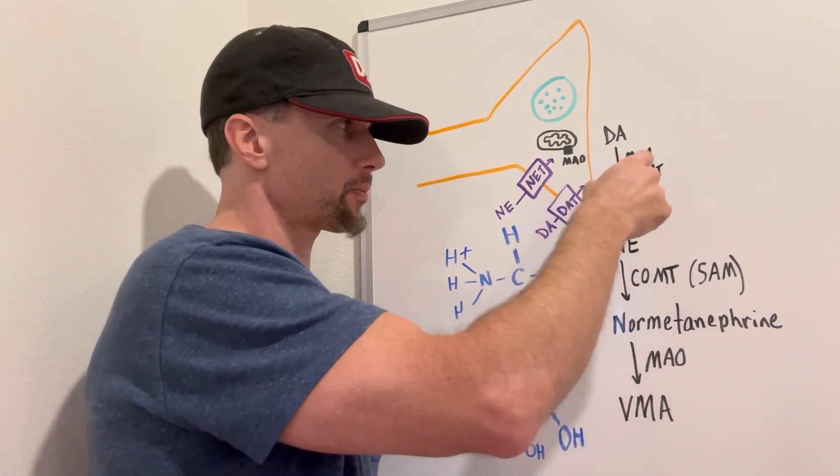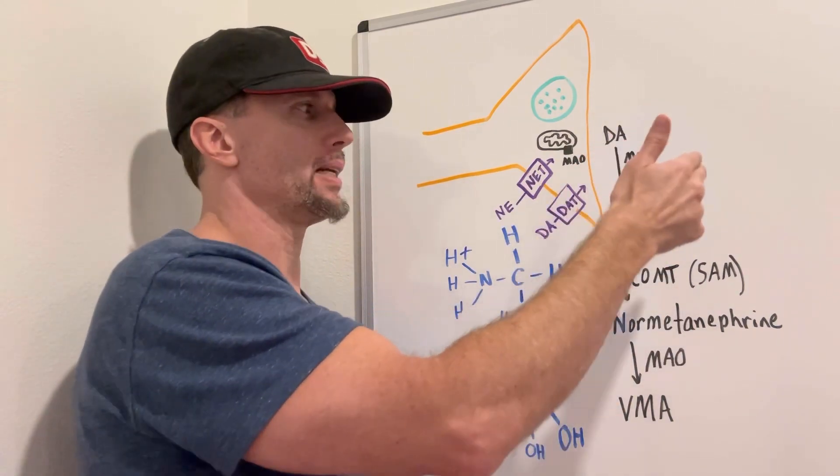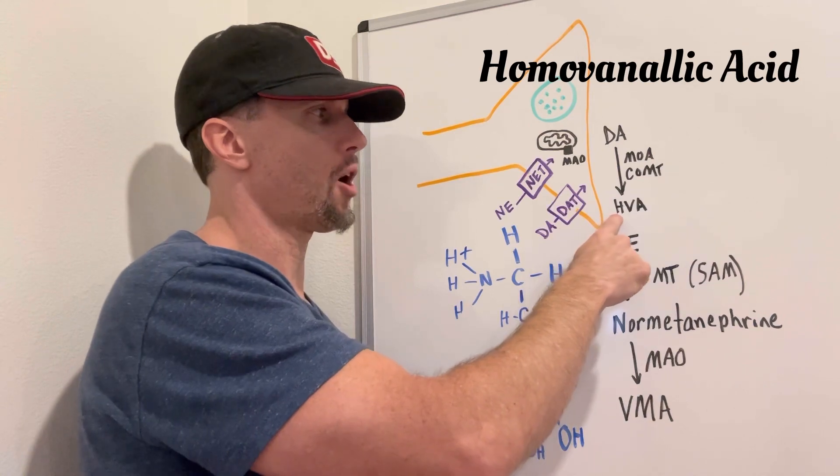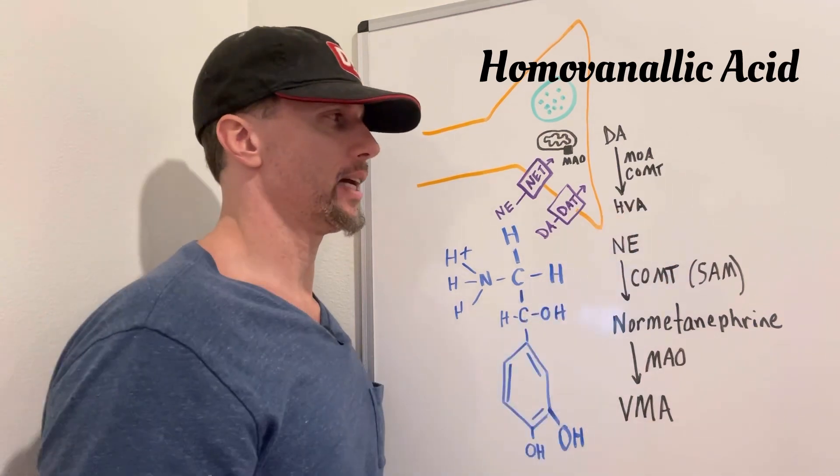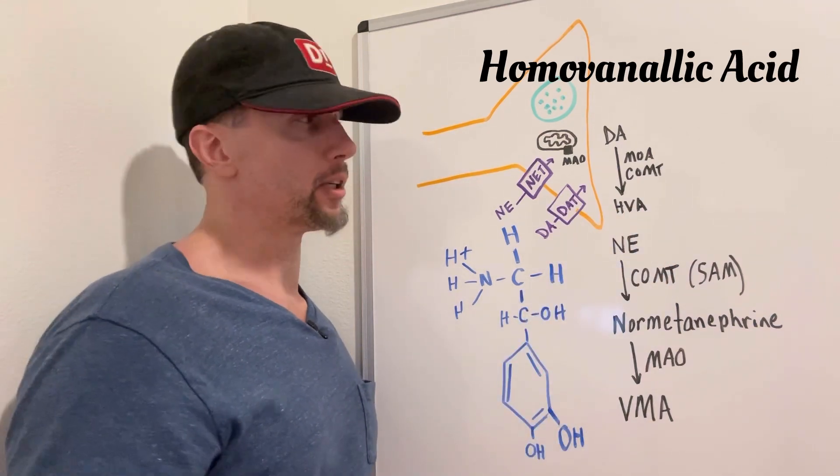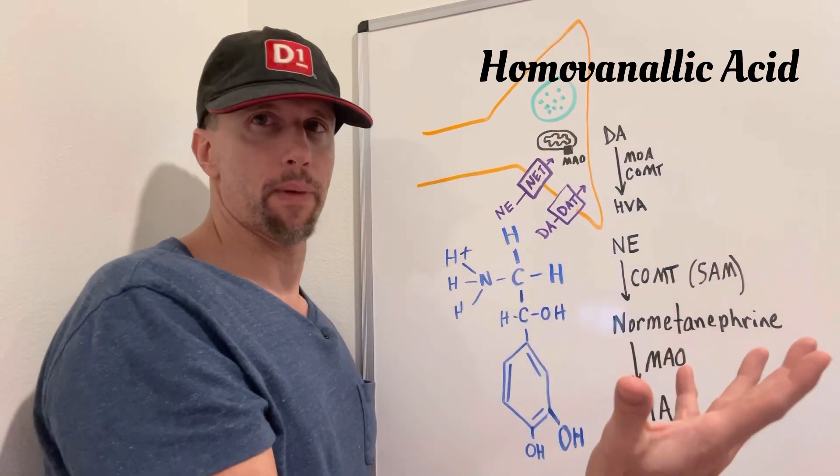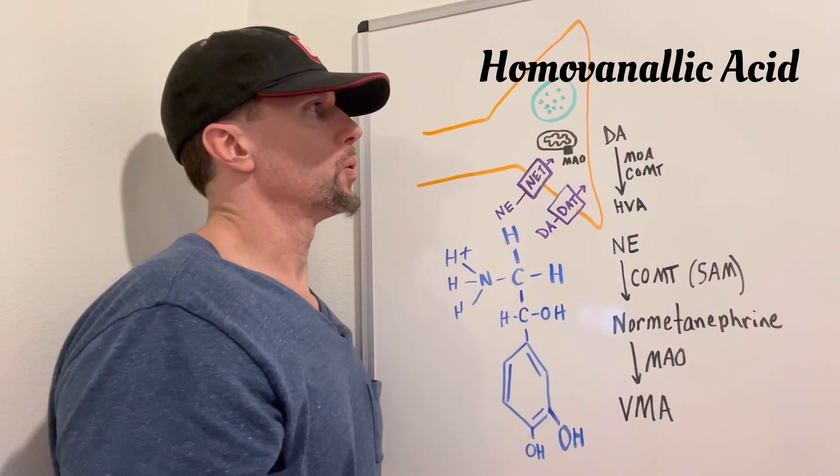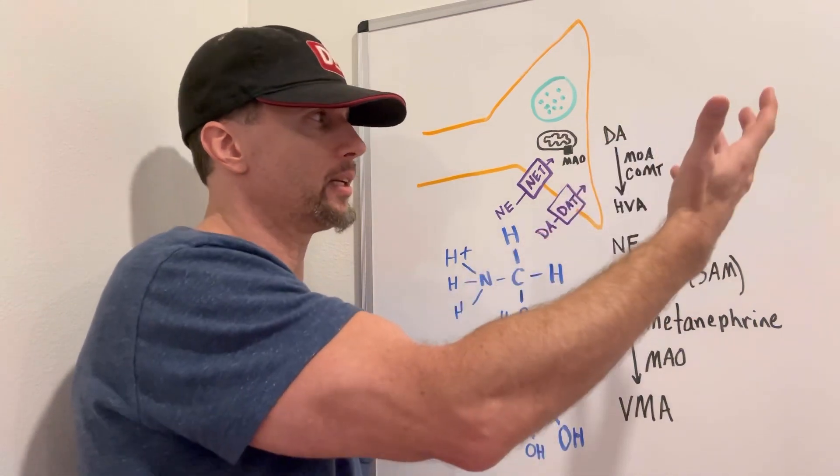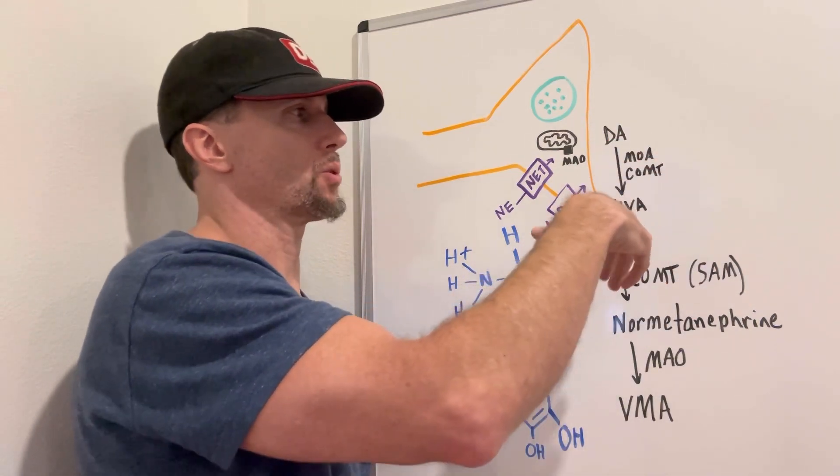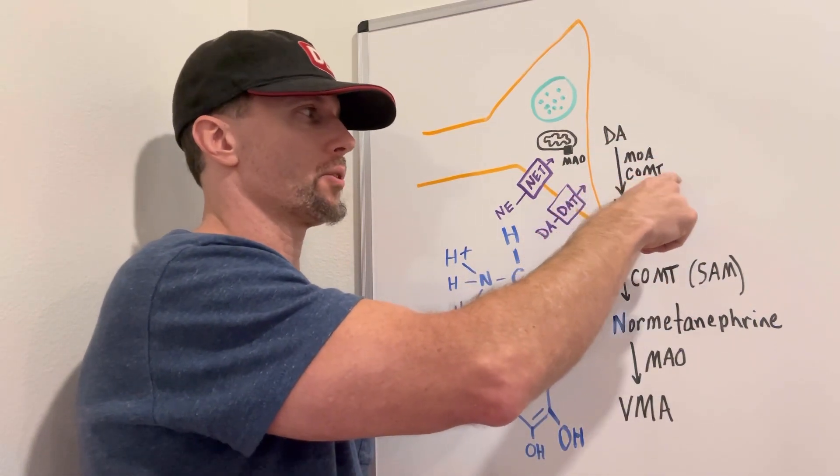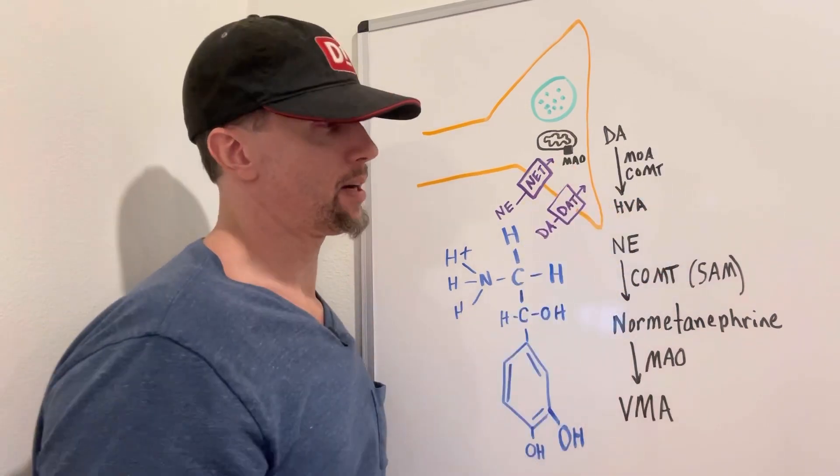So for example, dopamine, it'll go through intermediate and get down to what's called homovanillic acid or HVA, which can also be measured in the urine. The intermediate is not important because you don't measure that in the urine.